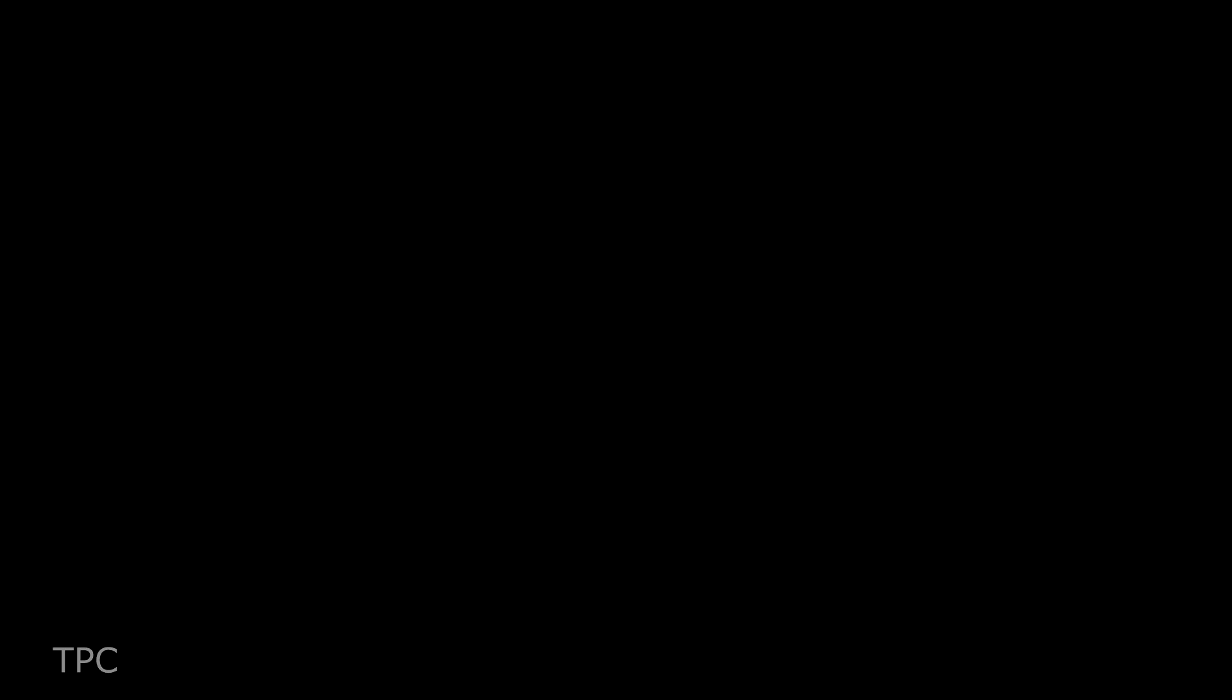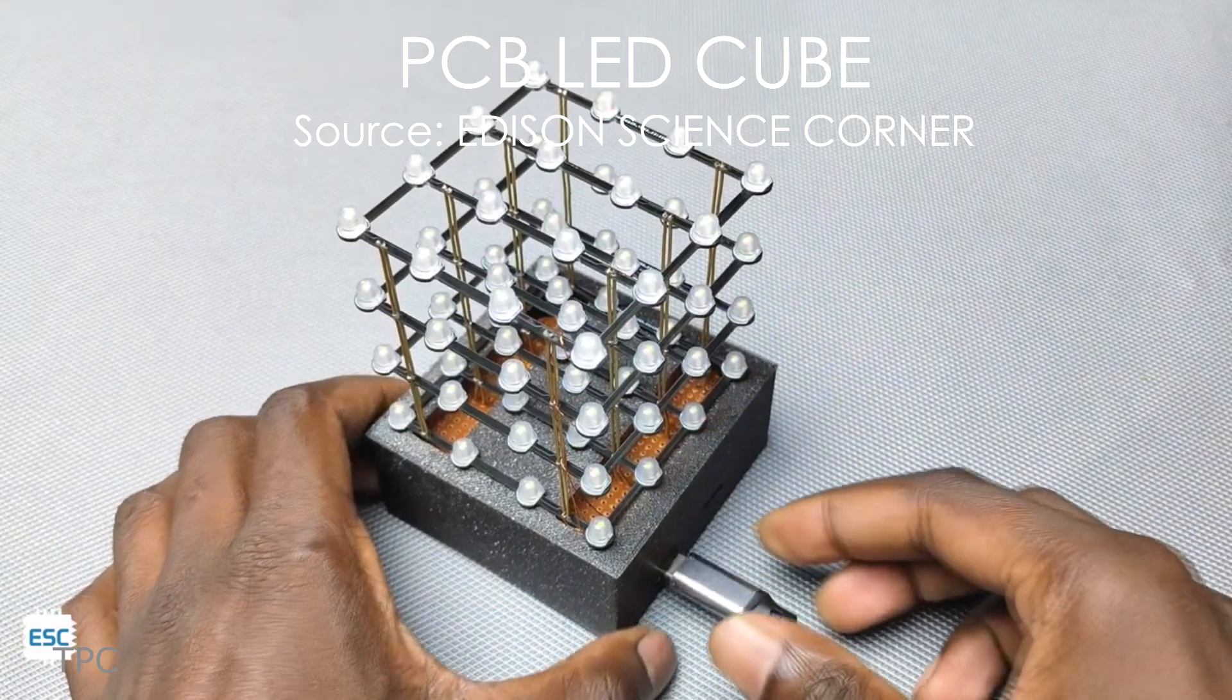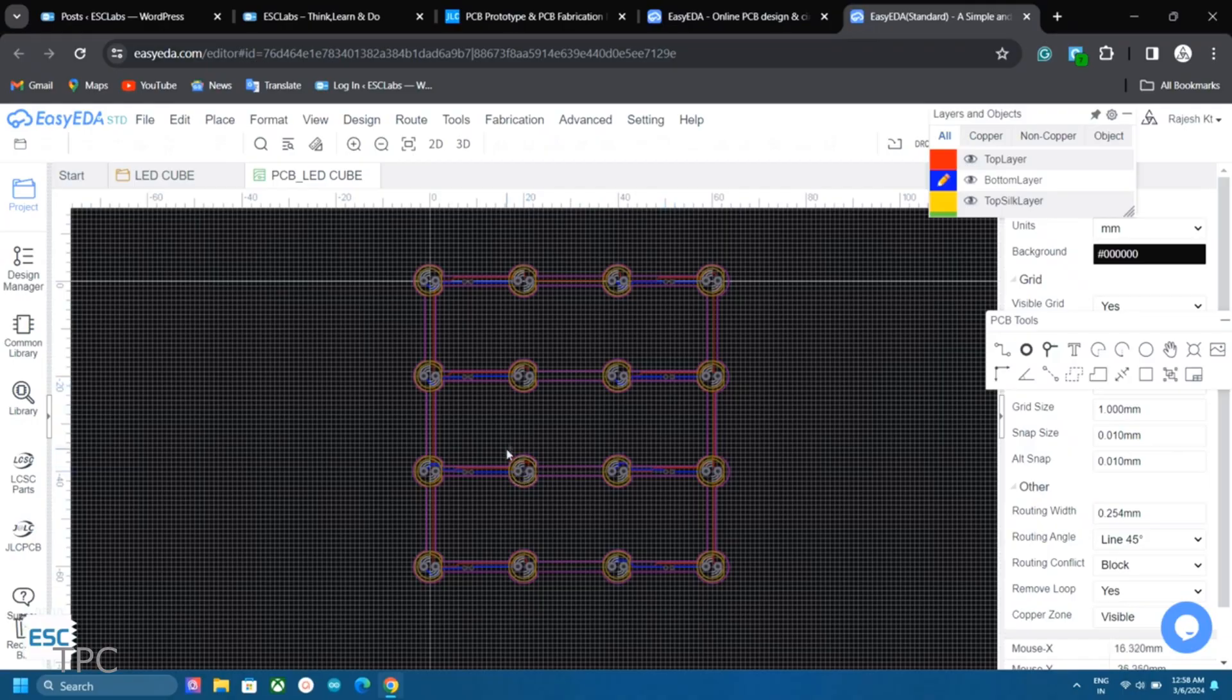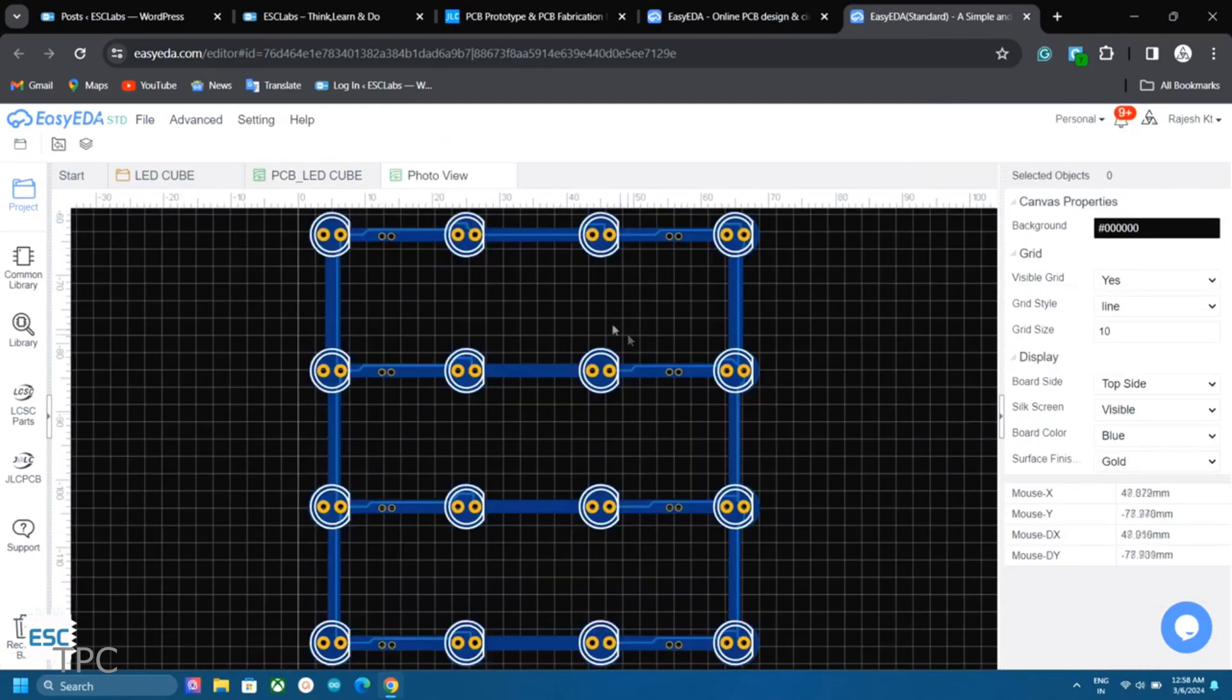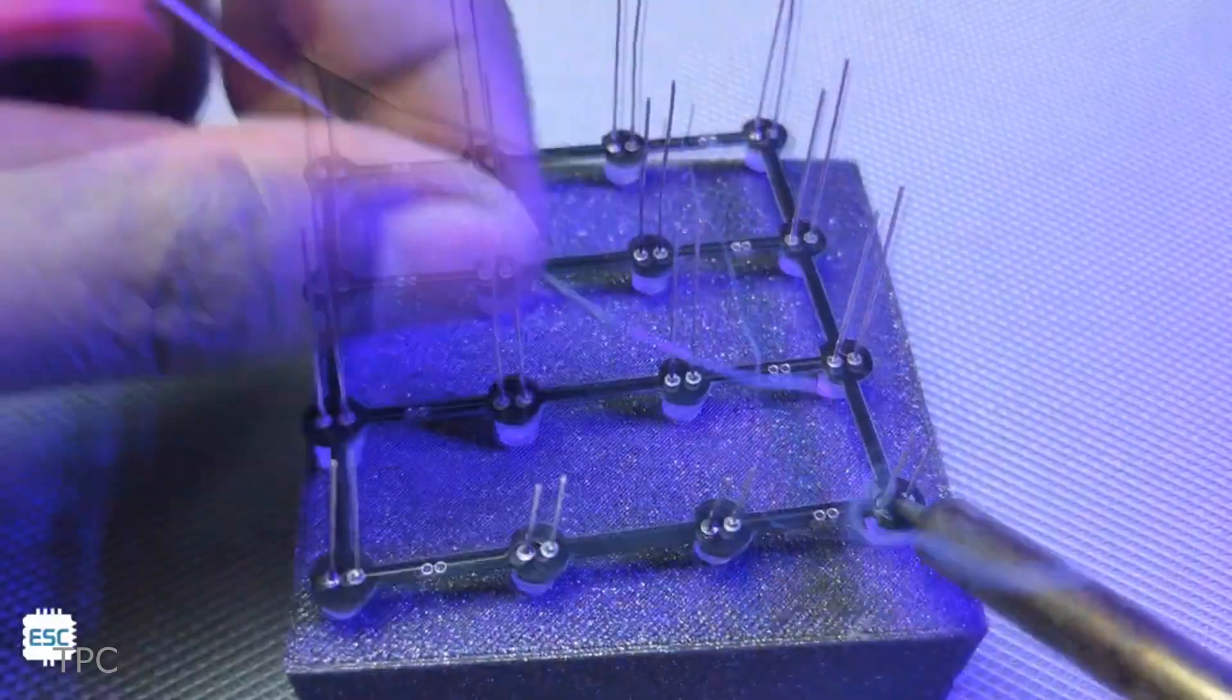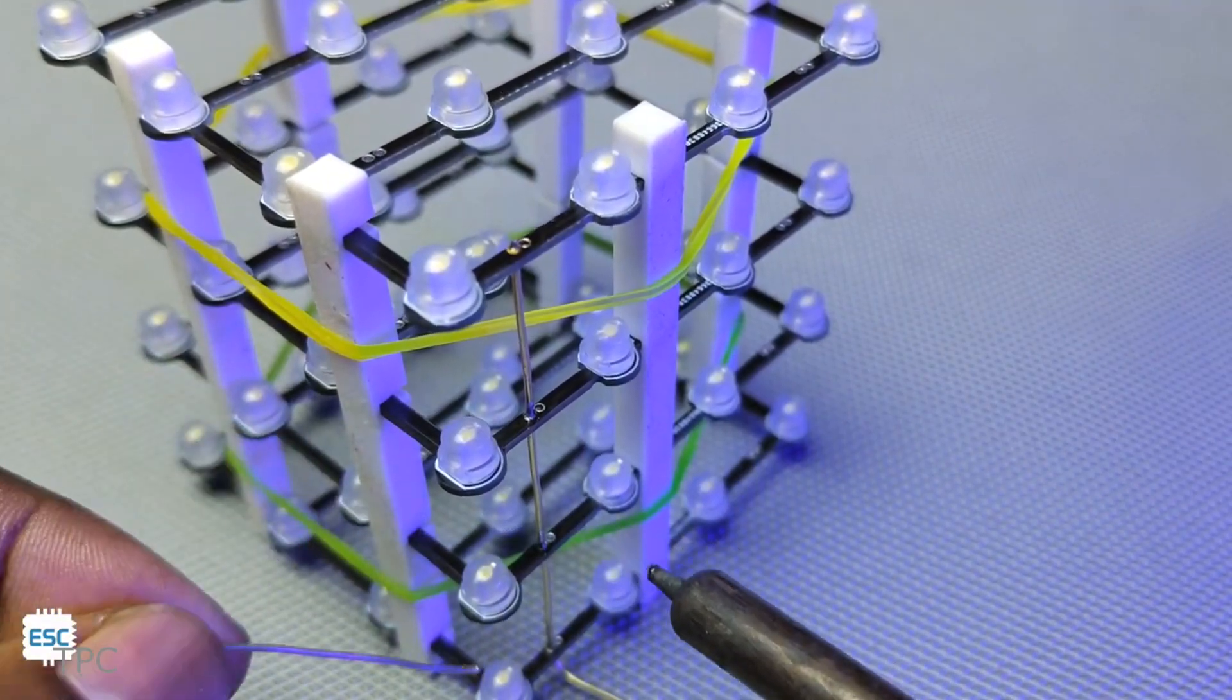Number 5. Next, we have an impressive LED cube made by Edison Science Corner. Instead of soldering LEDs directly to each other, he designed a single-layer PCB for each row, each containing 16 LEDs. This approach allowed him to easily solder 64 LEDs across four rows, simplifying the connection process.